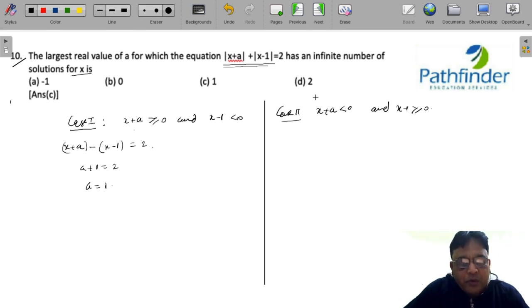What about the second case? In this case, -(x+a) + (x-1) must be equal to 2.